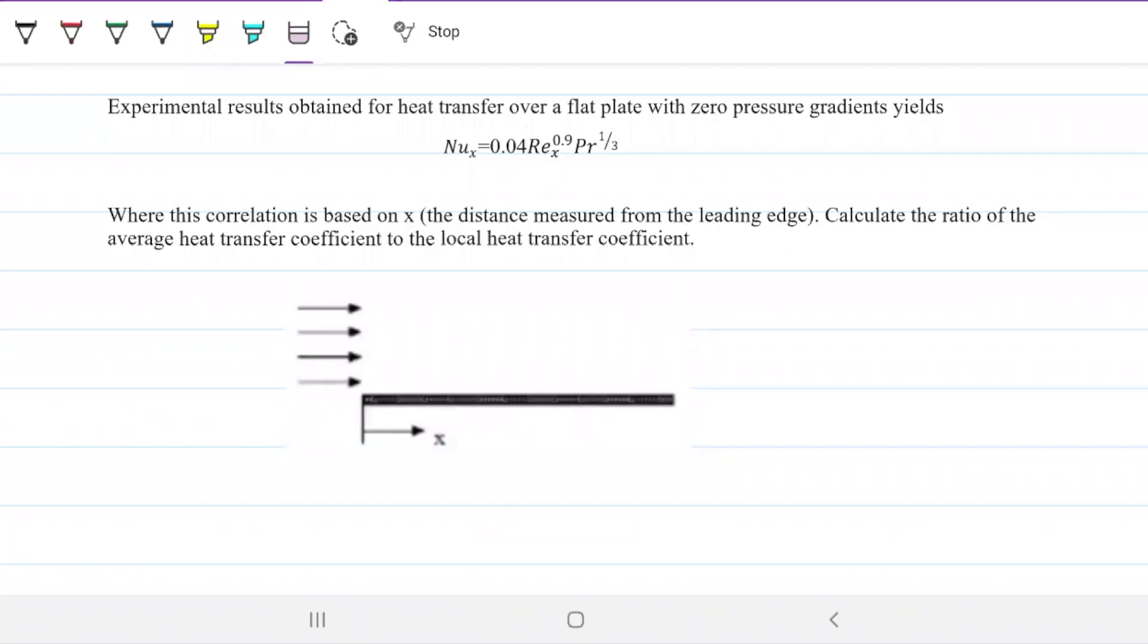Experimental results obtained for heat transfer over a flat plate with zero pressure gradient yields Nu_x = 0.04 Re_x^0.9 Pr^(1/3), where this correlation is based on x, and x is the distance measured from the leading edge.